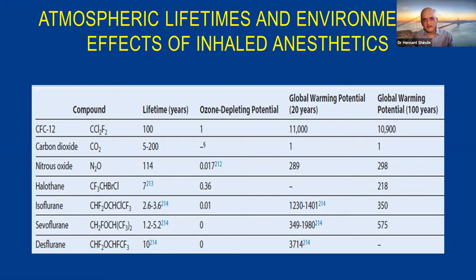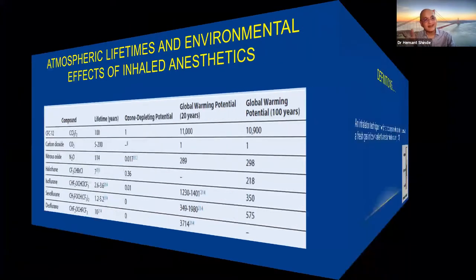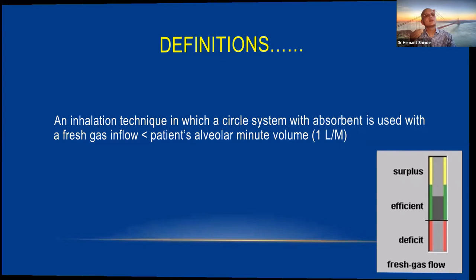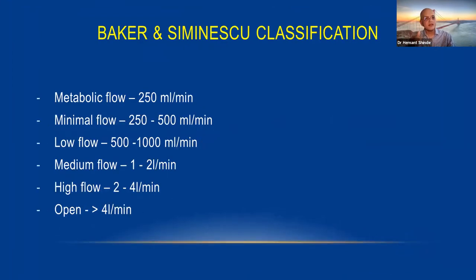Low flow anesthesia is defined as an inhalation technique in which a circle system with a CO2 absorber is used with a fresh gas inflow less than the patient's alveolar minute volume. According to the Becker and Sylvius classification: open circuit is more than 4 L; high flow 2–4 L; medium 1–2 L; low flow 500–1000 ml/min; minimal flow 250–500 ml/min; and metabolic flow approximately 250 ml/min for a 70 kg adult.